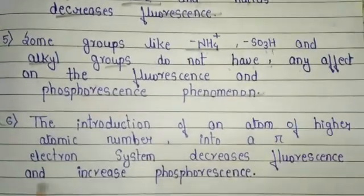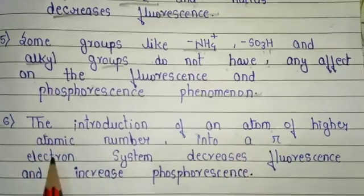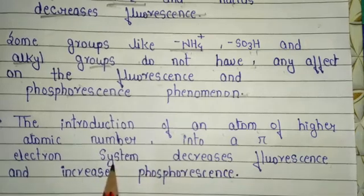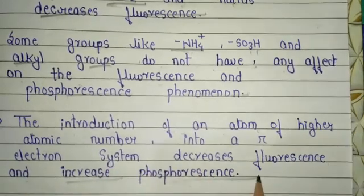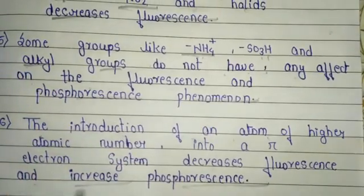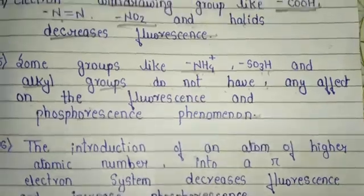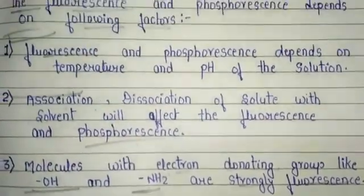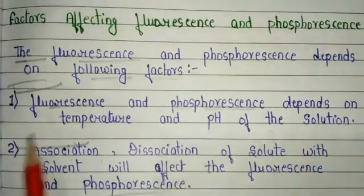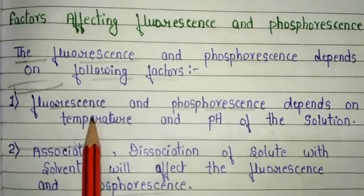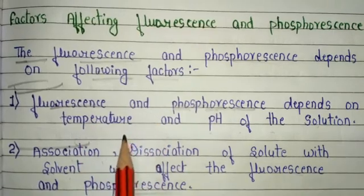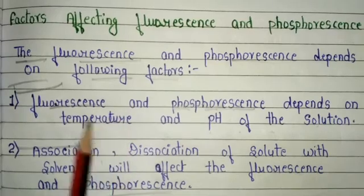The sixth important factor is the introduction of an atom of higher atomic number into a pi electron system, which decreases fluorescence and increases phosphorescence. These are the important factors that affect fluorescence and phosphorescence. This is a complete discussion about fluorescence and phosphorescence, an important topic related to scattering spectroscopy. If you find this video helpful for your exam preparation and these notes helpful for your own note-making, please like, share, and subscribe to my channel. Thank you so much for watching.